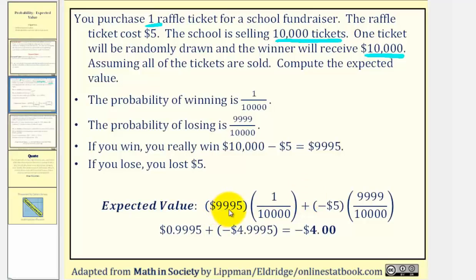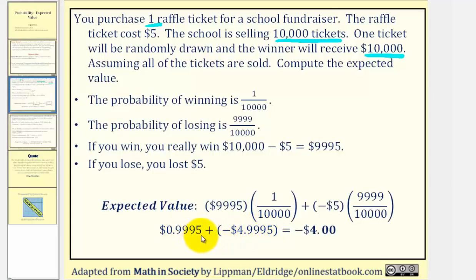$9,995 times 1/10,000 equals $0.9995. Then negative $5 times 9,999/10,000 equals negative $4.9995. Finding the sum, the result is negative $4.00. This is our expected value for this event, which means if you were to play this lottery time after time, the expected result would be that you would lose four dollars each time.